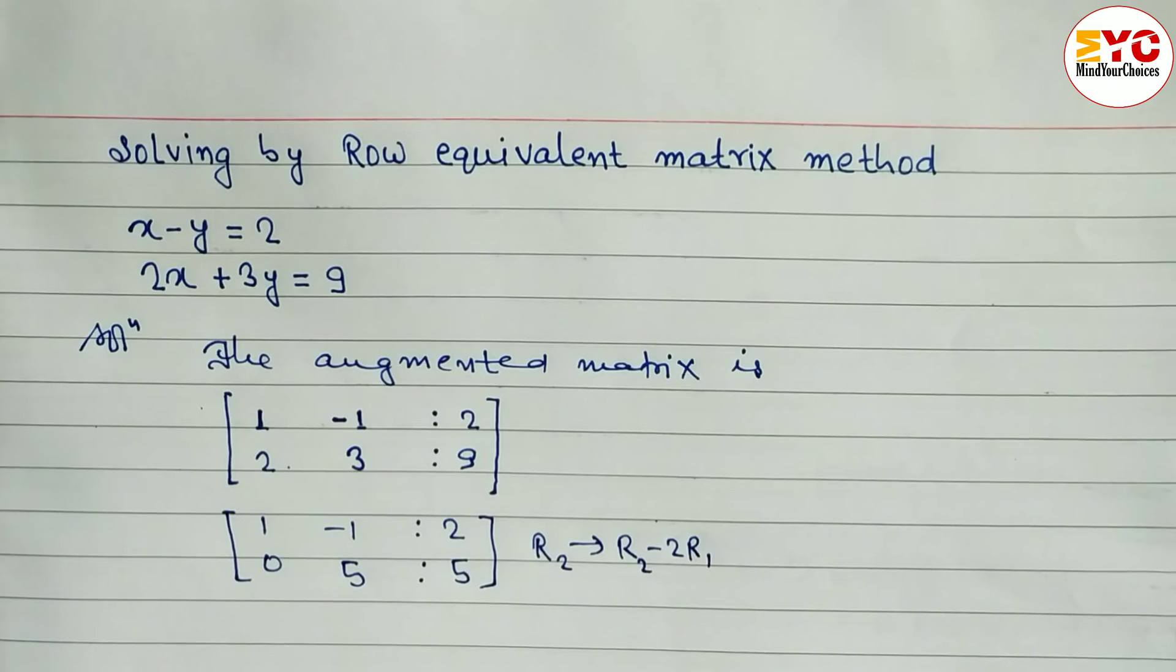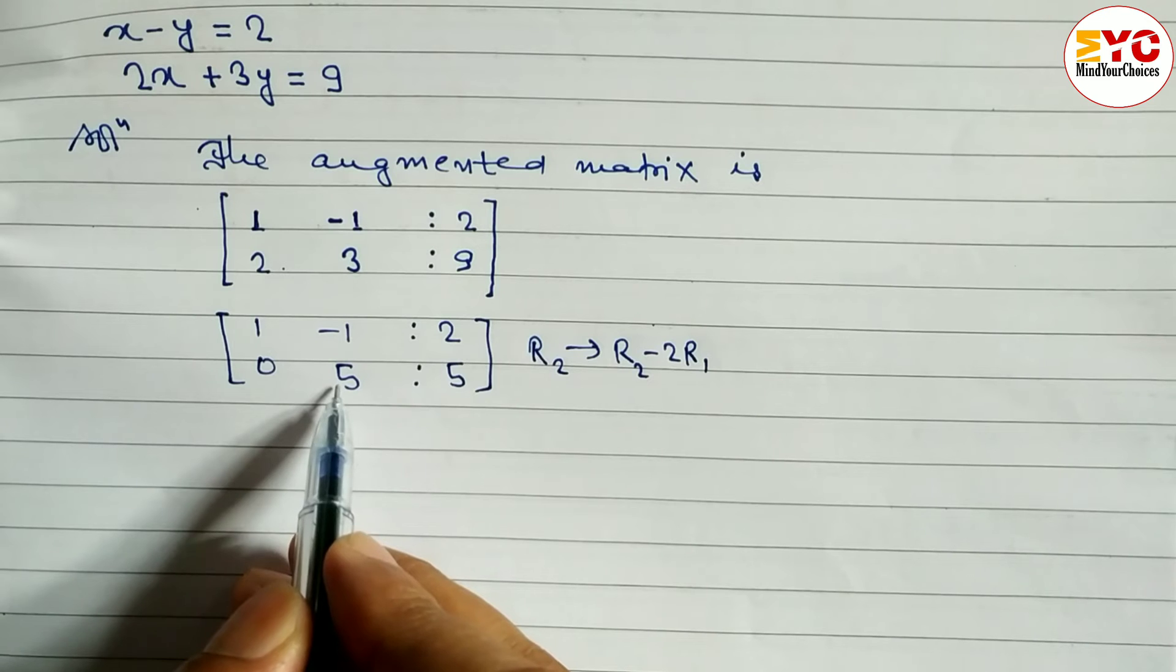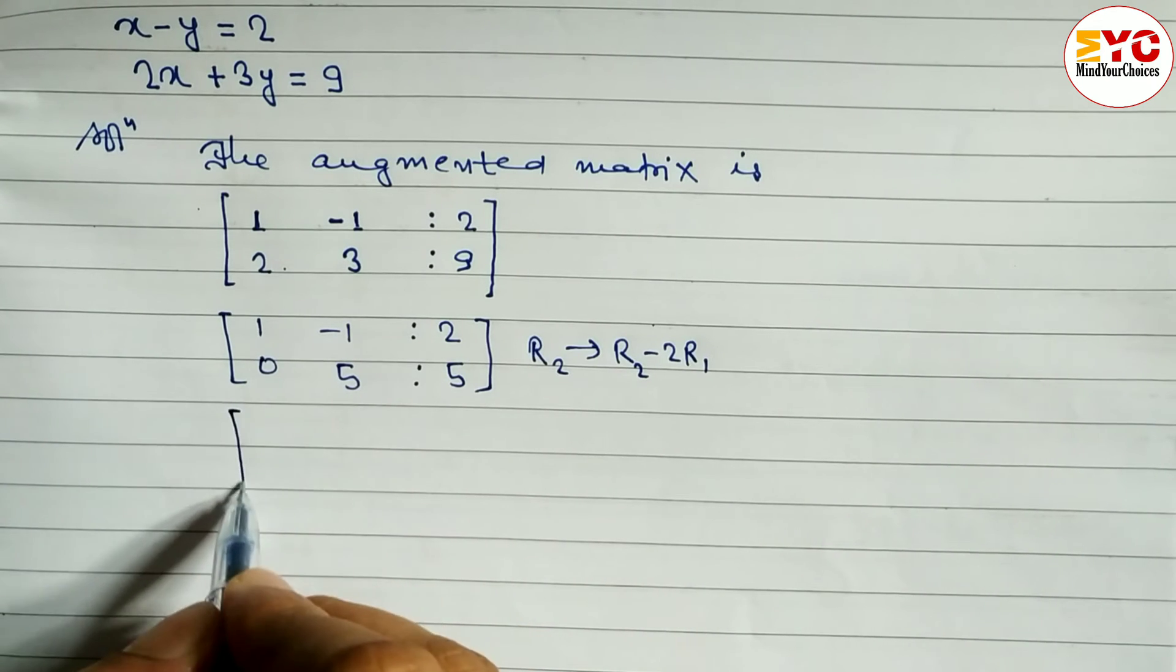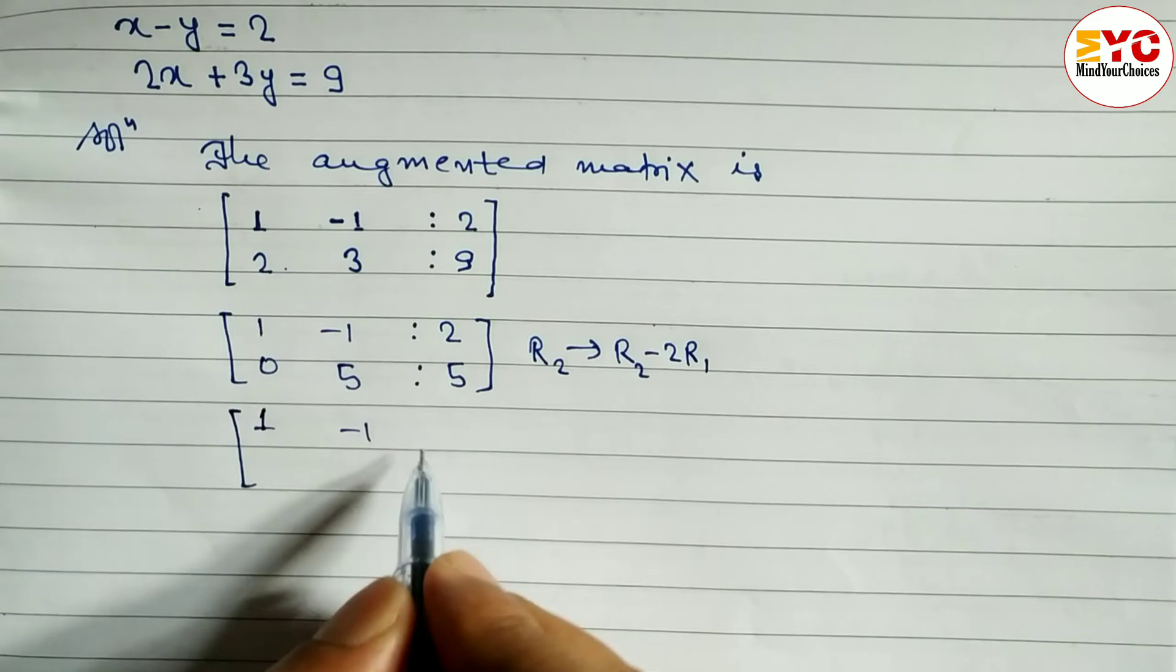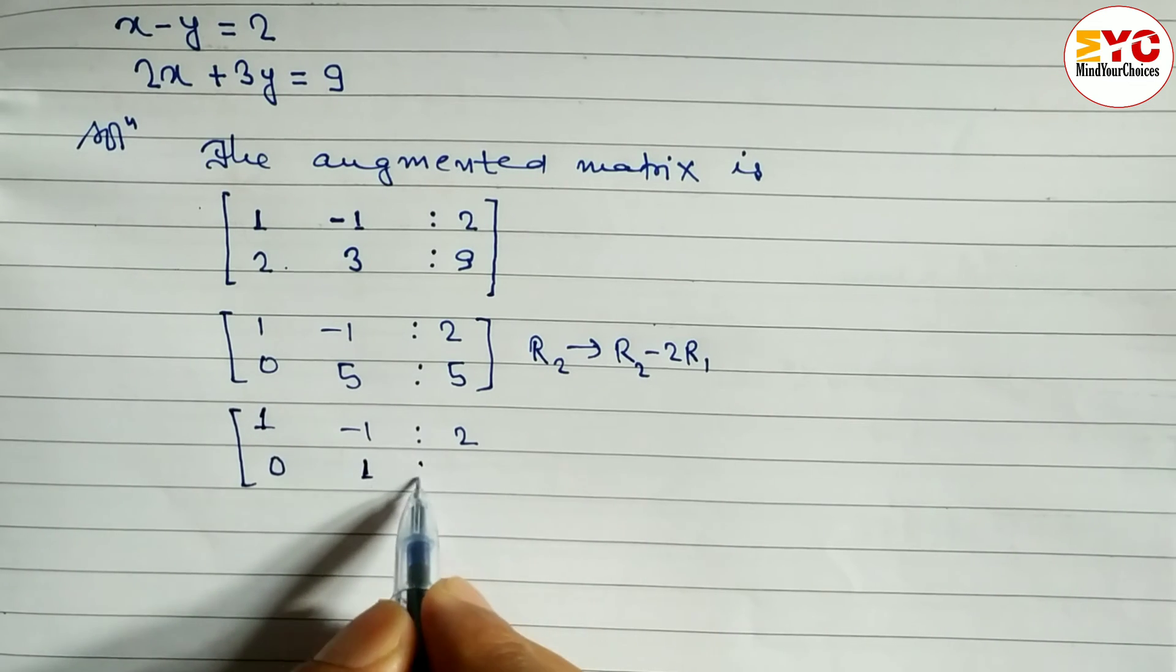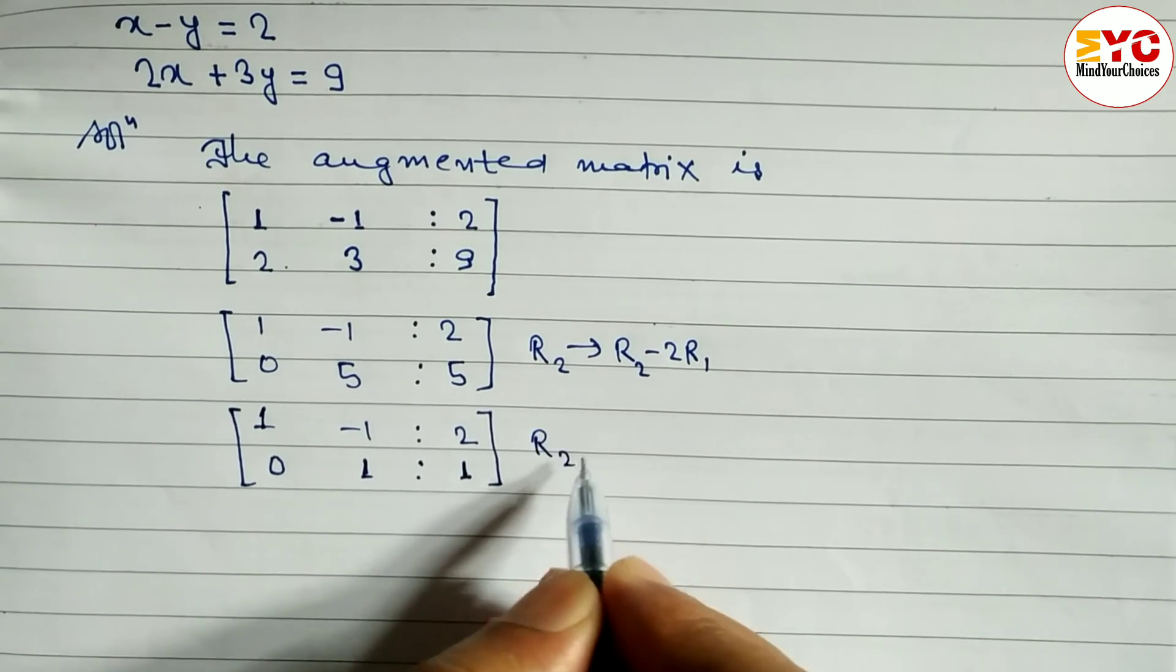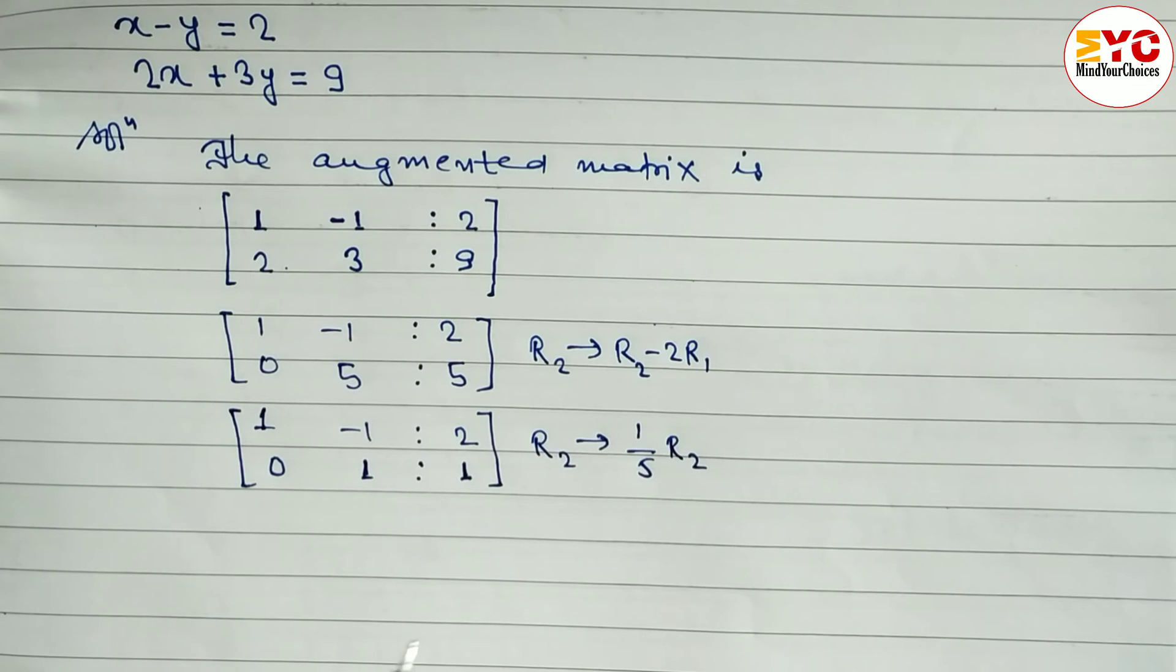After this, next one what we have to do? This one we have to convert in the form of 1. So how to convert this one? We have to divide by 5. When you divide by 5 we get 1. So let's do it. 1 minus 1, 2, 0. When you divide by 5, 0 by 5, 5. When you divide by 5, 5 by 5 means 1. And when you divide by 5 we get here 1. What we done here? R2 tends to 1 by 5 R2.